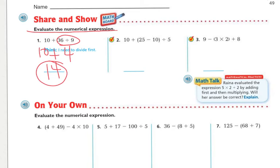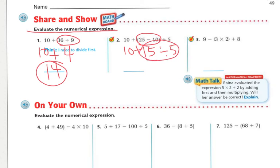Next: ten plus parentheses twenty-five minus ten, parentheses, divided by five. Do the parentheses first: twenty-five minus ten is fifteen. Bring down the ten plus and divided by five. Next do the division: fifteen divided by five is three. Now ten plus three equals thirteen.